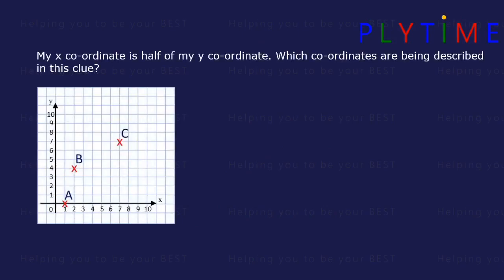My x-coordinate is half of my y-coordinate. Which coordinates have been described in this clue? First let's find the coordinates of all the points. A equals: the x-coordinate is 1, and y is 0.